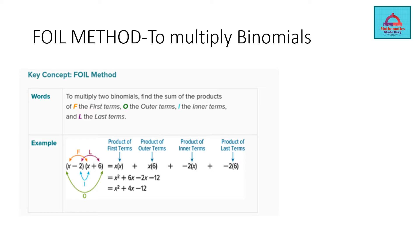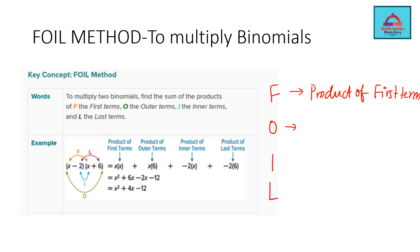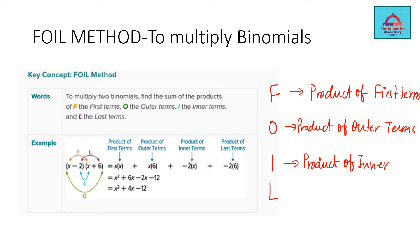So this is called the full form of FOIL — F, O, I, L. F means the product of the first terms of the binomial. O means the product of outer terms of the binomial. I means the product of inner terms of the binomial, and finally L means the product of last terms of the binomial.